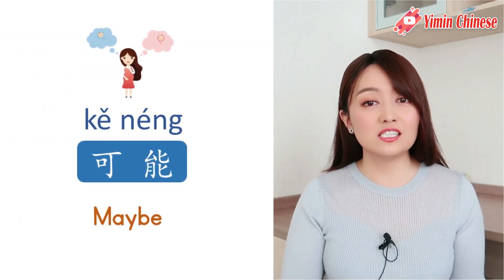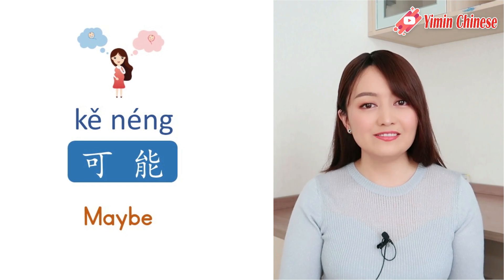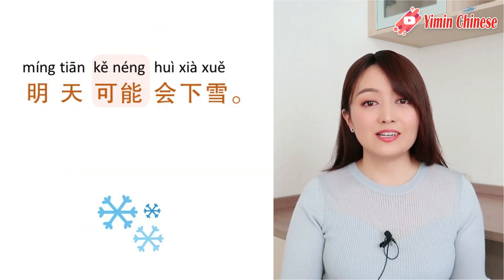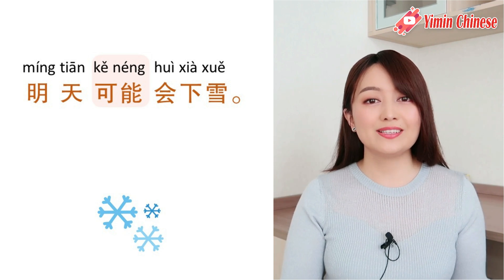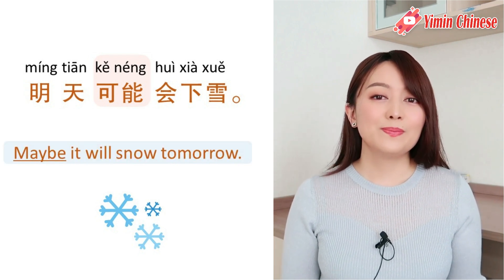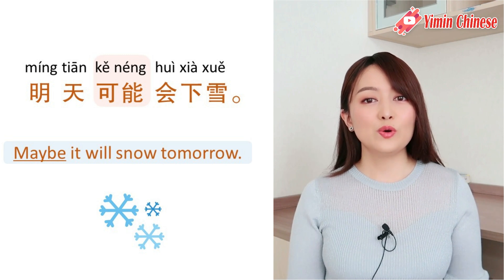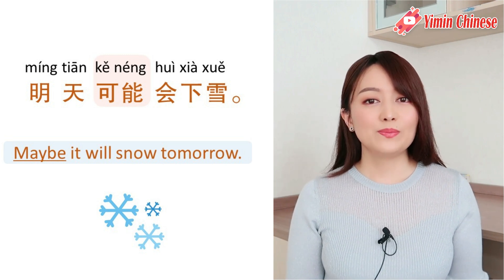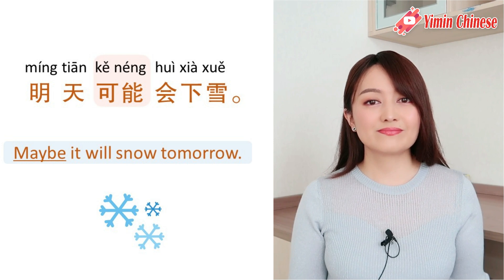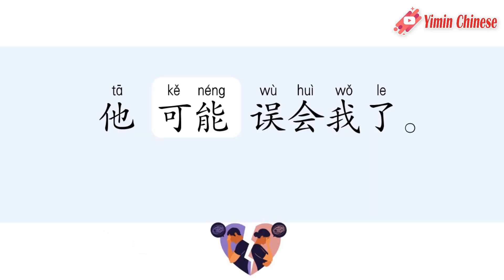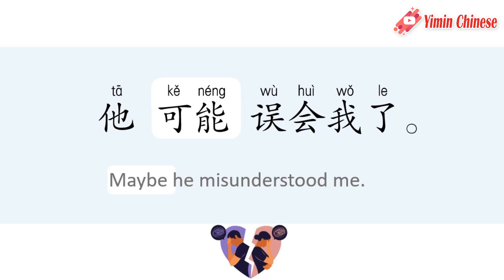好,下一个, maybe. That is 可能. 明天可能会下雪。Maybe it will snow tomorrow. Another example, 他可能误会我了。Maybe he misunderstood me.